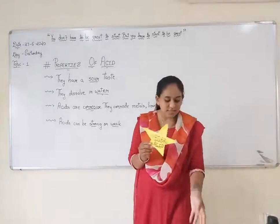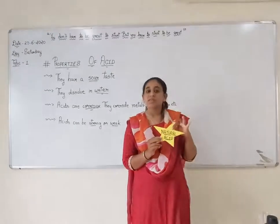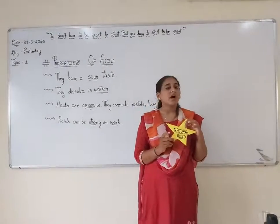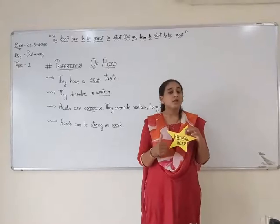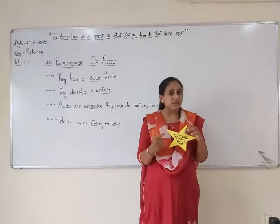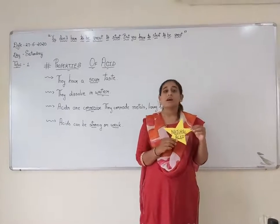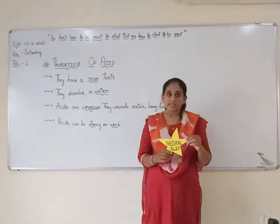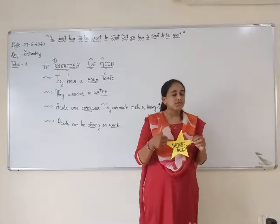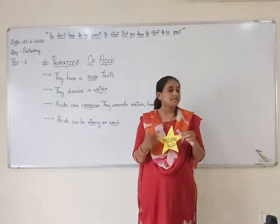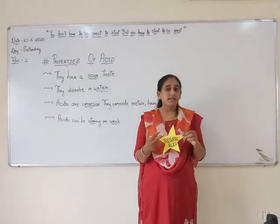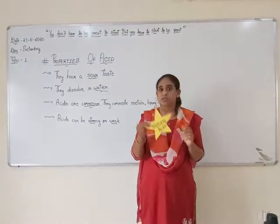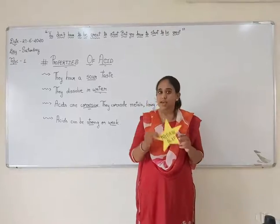As the name suggests, natural acids are natural. They are produced by plants and animals, and they are also known as organic acids. Citric acid, tartaric acid, and lactic acid are a few examples of natural acids.